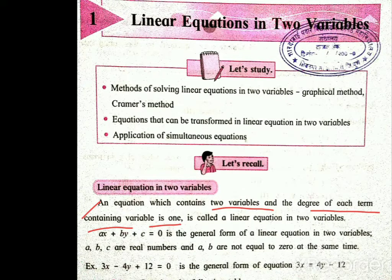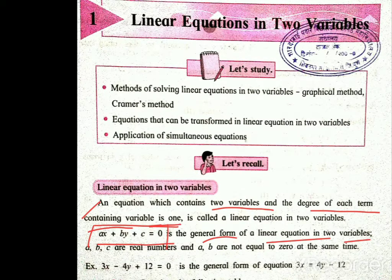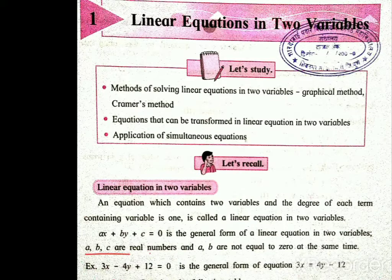What is the general form of a linear equation in two variables? General form of linear equations in two variables is ax plus by plus c is equal to zero, where a, b, c are real numbers and the value of a and b are not equal to zero at the same time.